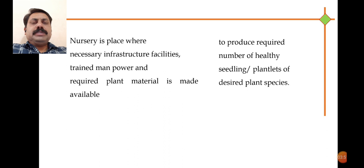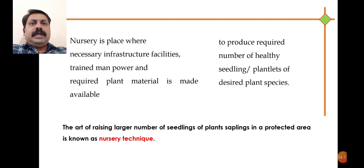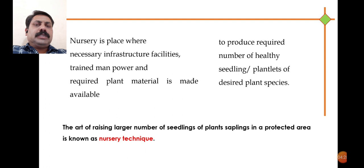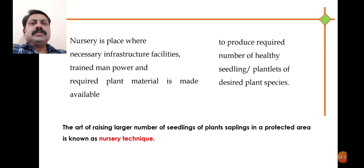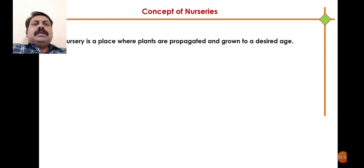Using these basic infrastructural facilities, we can establish a nursery where we cultivate seeds and seedlings to prepare seedlings as well as saplings. Nursery cultivation is an art — common or unskilled persons cannot do this. It requires a trained or skilled person to raise plants, which is why it is called a technique. It is the art of raising a larger number of seedlings of plants in a protected area, and this is called nursery technique.